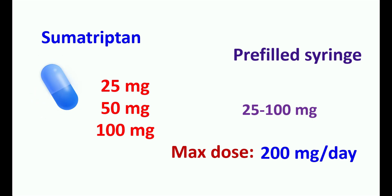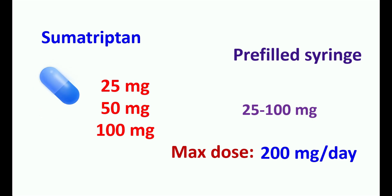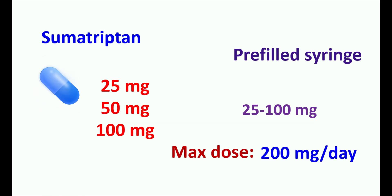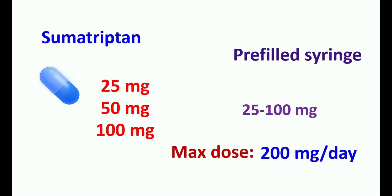The dose is different when taken by intranasal or subcutaneous route. As a subcutaneous injection, it can be given at a dose of 6 mg and the dose may be repeated after 1 hour if required. In case of intranasal spray, the dose may vary from 5 mg to 20 mg based on the severity of migraine attacks.